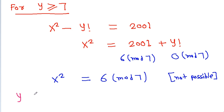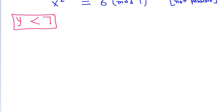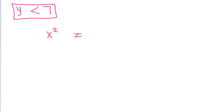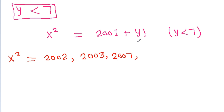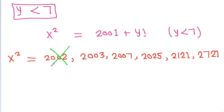So y must be less than 7, and x squared equals 2001 plus y factorial. For y equal to 1, x² = 2002; for y equal to 2, x² = 2003; for y equal to 3, x² = 2007; for y equal to 4, x² = 2025; for y equal to 5, x² = 2121; for y equal to 6, x² = 2721.